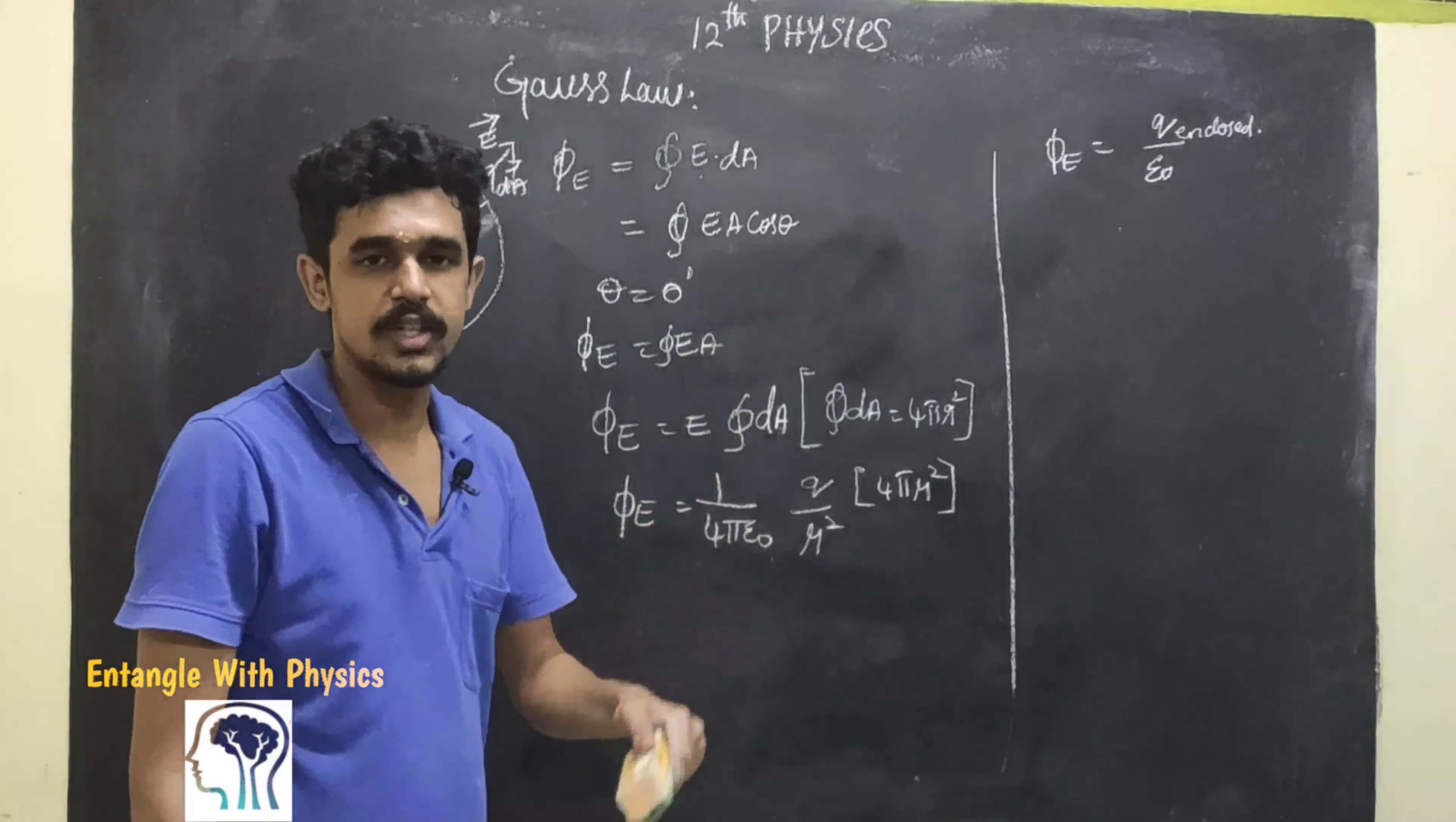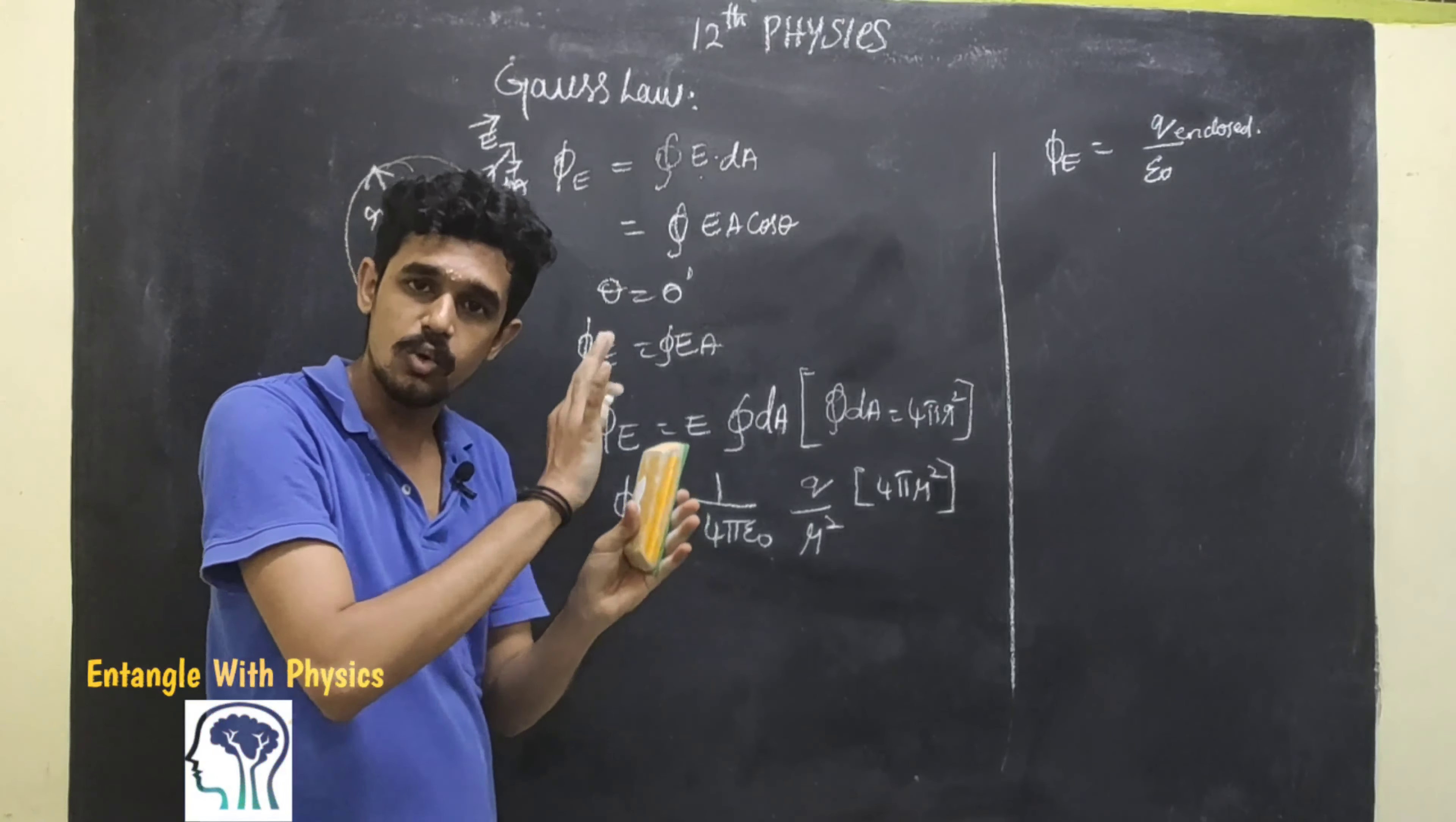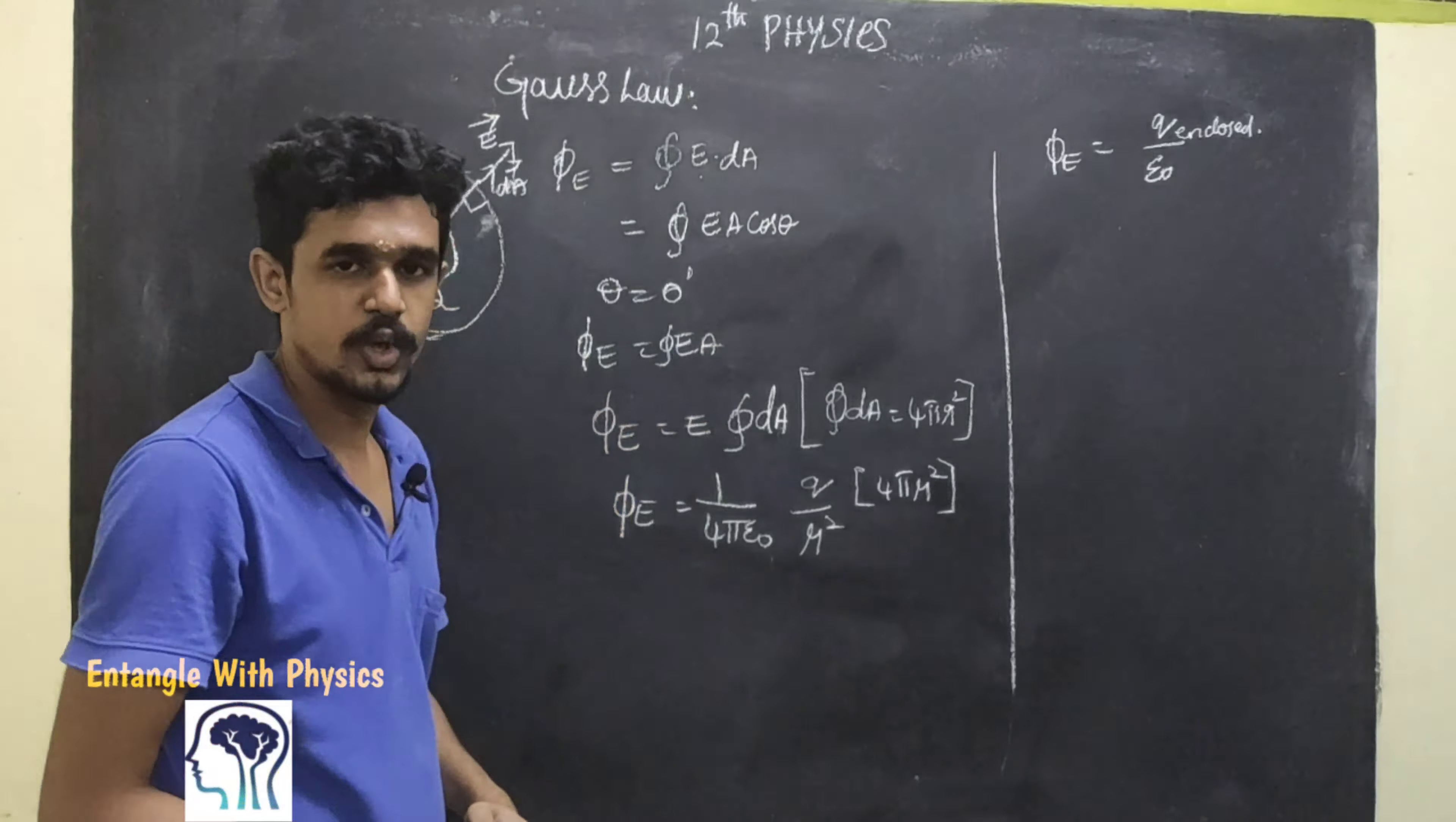This is Ea cos θ. It is a closed integral, a closed path. If we integrate it, and theta equals 0 degrees, then φE equals Ea.